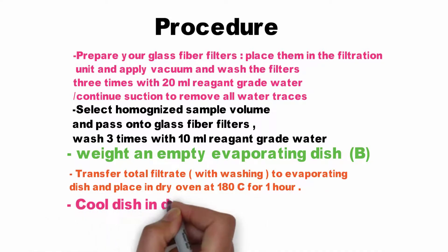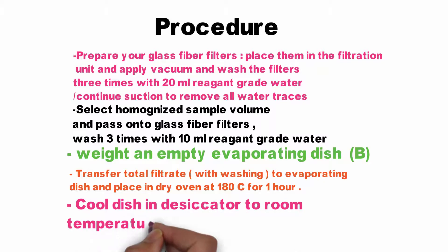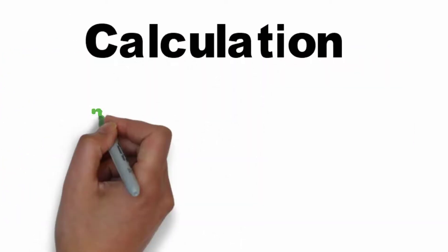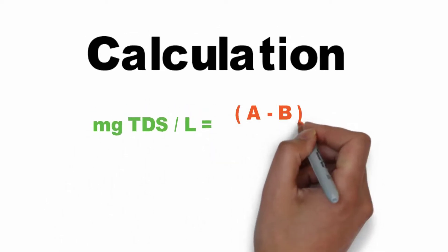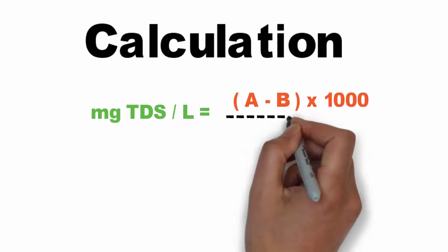After that, cool the dish in a desiccator to room temperature and take the final weight. Now to the calculation: milligrams of TDS per liter equals (A minus B) times 1000 divided by the sample volume in milliliters.